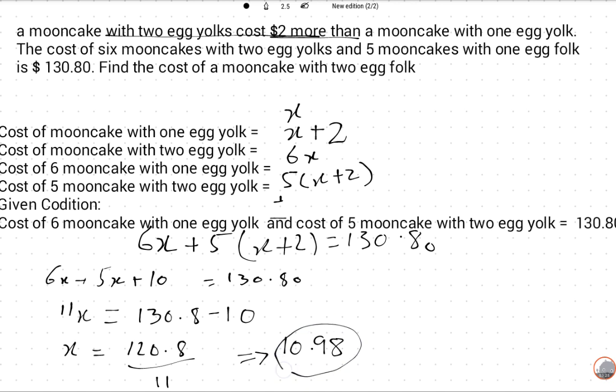With two egg yolks will be X + 2, which is 10.98 + 2, which equals $12.98. This is the required answer. Thank you so much.